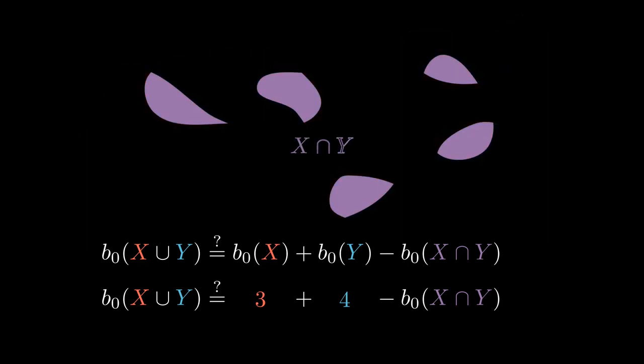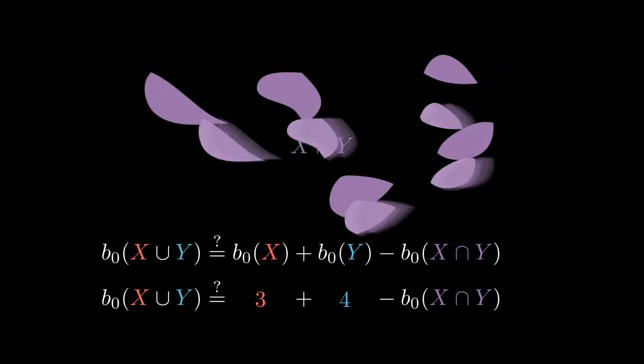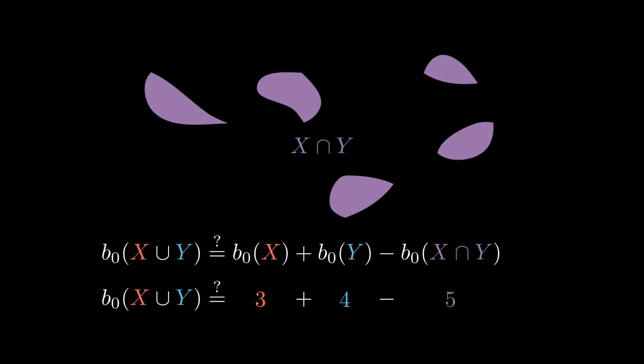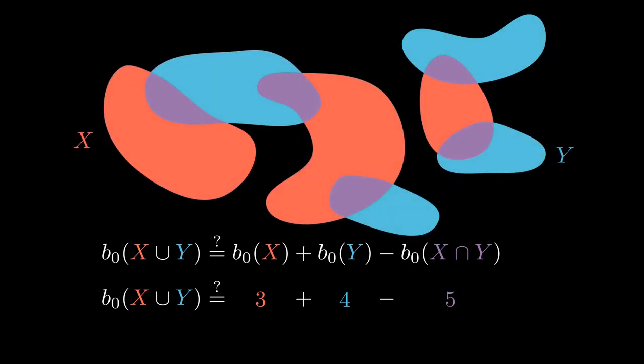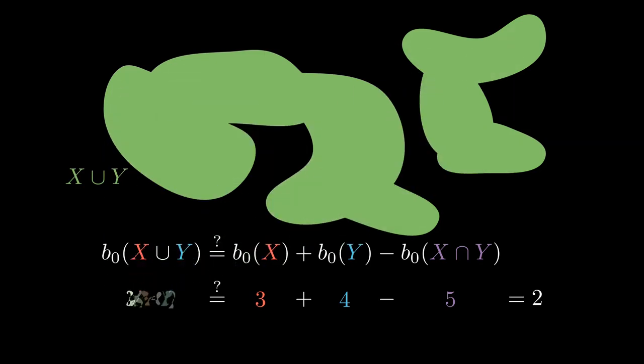Now let's look at the intersection of X and Y — there are five pieces in X intersect Y. So we do some arithmetic: 3 plus 4 minus 5 is 2. And sure enough, looking at X union Y, viewing all the pieces together, we count that there are indeed two pieces. Of course, a single example isn't enough for a proof, so to get a better feeling for what's going on, let's work out another example of inclusion-exclusion and counting the number of connected components.